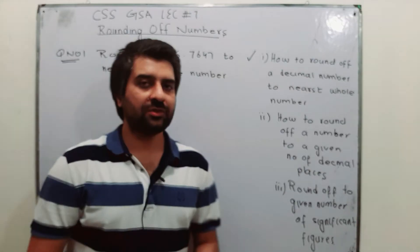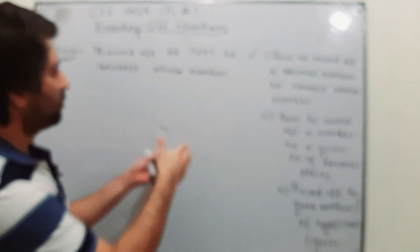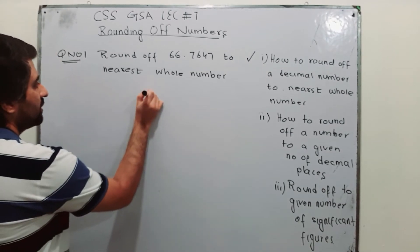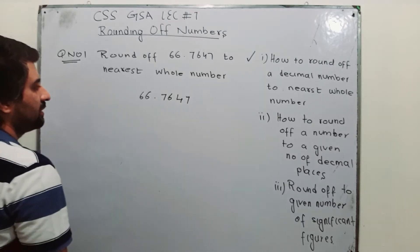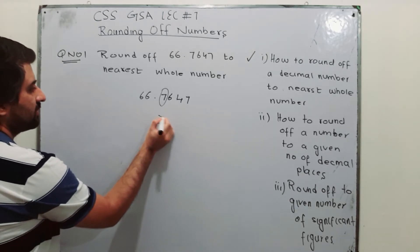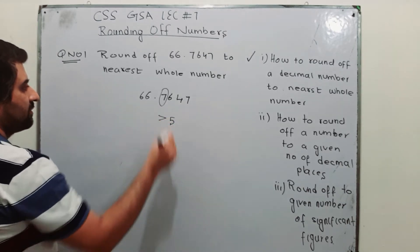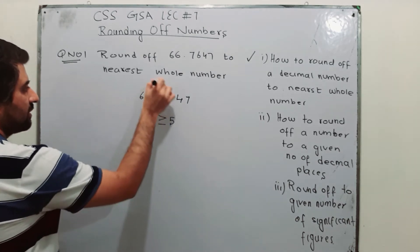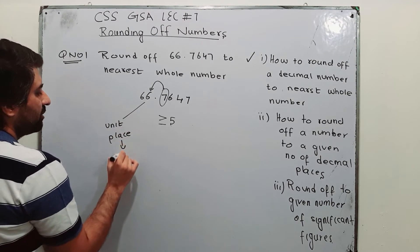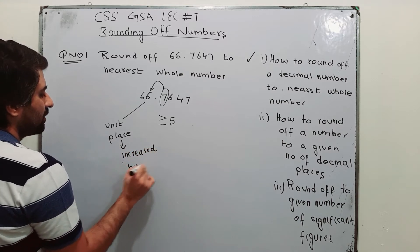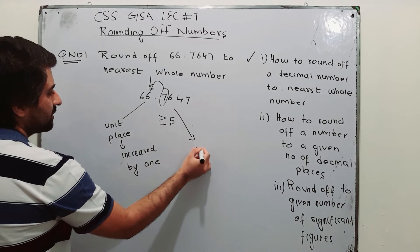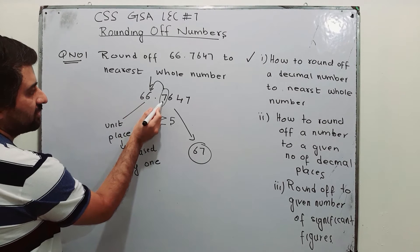66.7647 is a number which is to be converted into a whole number, to the nearest whole number. Write down 66.7647 and observe the first digit after the decimal point. This digit is 7, which is greater than 5. If this digit is greater than or equal to 5, then the digit at the units place is to be increased by 1. So the answer becomes 67.